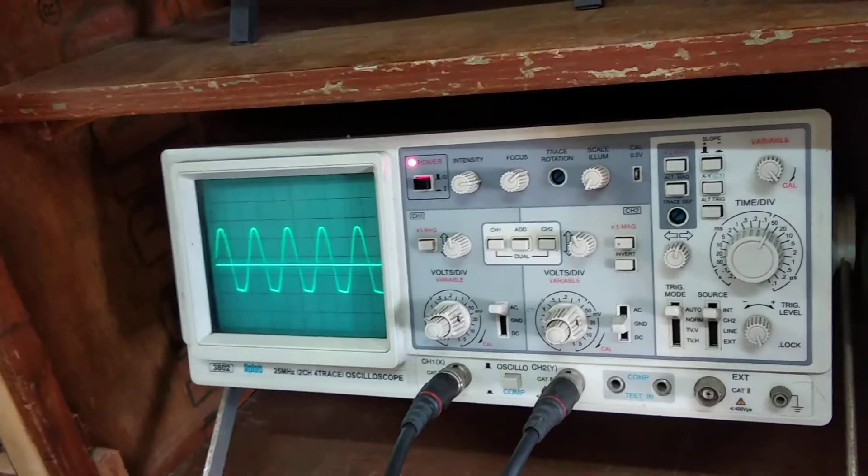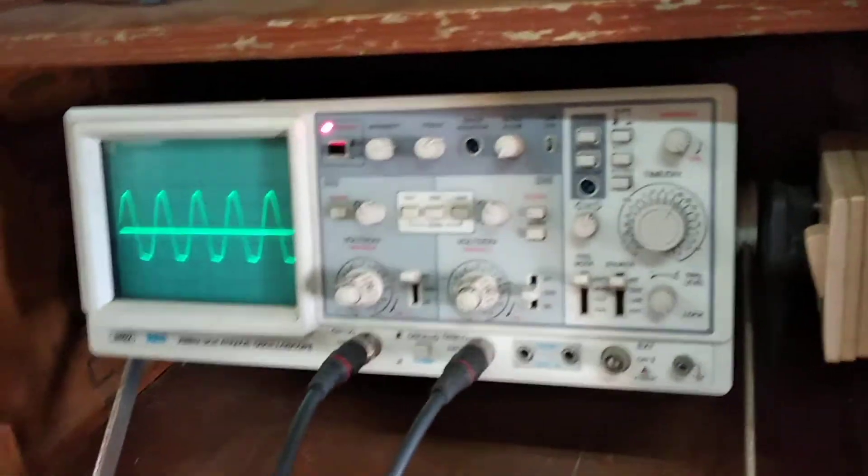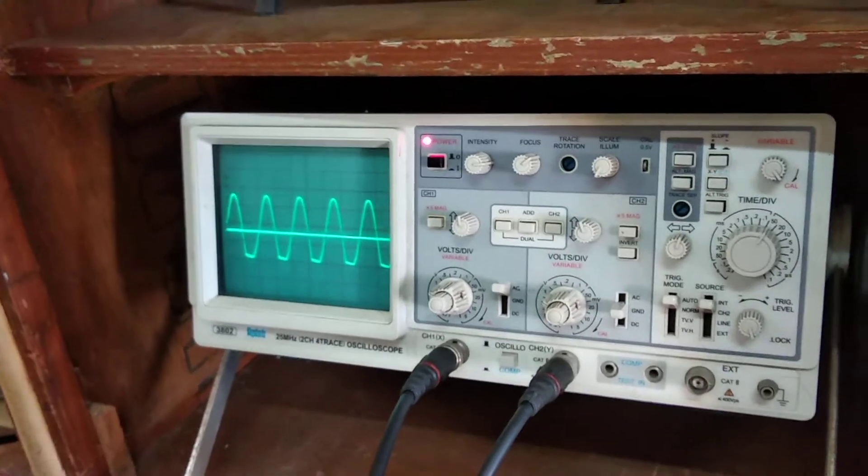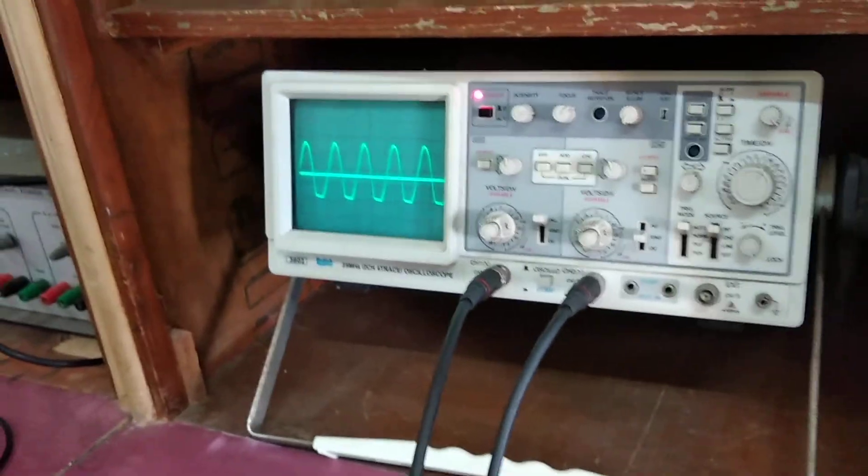The frequency that we get is around 10 kilohertz. That is 10 into 1000 because it is microseconds. And you will get 10 kilohertz frequency from the oscillator. Thank you.